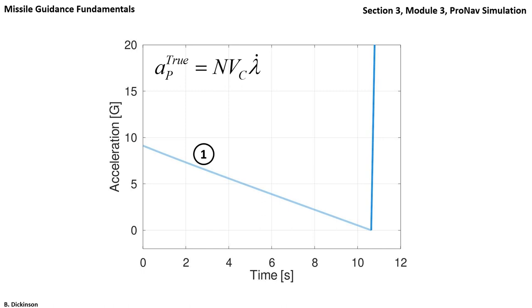Starting at about 9 Gs, the true ProNav command monotonically decreases to 0 Gs at about 10.6 seconds. What's happening is that the true ProNav guidance law is enforcing a collision triangle. This process involves driving lambda dot to 0, meaning that AP true is also driven to 0.